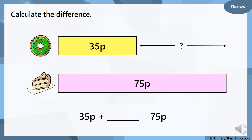We want to buy a donut for 35p and we also want to buy a cake. If we buy those, the total cost is 75 pence and we've already spent 35p on the donut, so we need to work out what the difference is. We can count up in tens from 35 up to 75: 45, 55, 65, 75 — that's 40 pence. 35 pence plus 40 pence equals 75 pence.